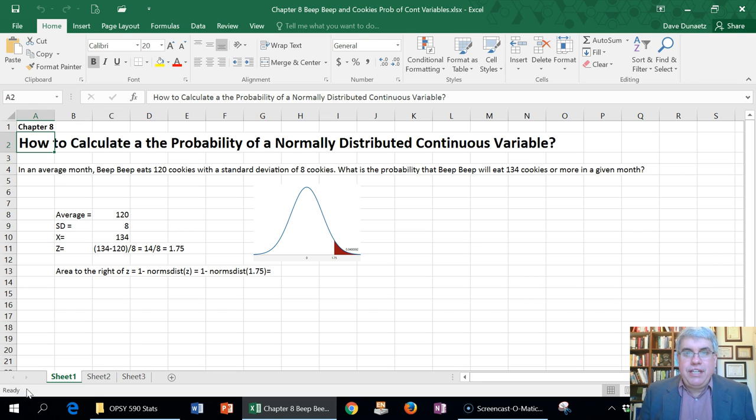Now, we want to know, given this information, what's the probability that Beep Beep will eat 134 cookies or more in a given month? Okay, because maybe 134 is the world's record or something like that. And we want to find out if it's likely that he'll beat that or how likely would it be that he'd beat it this month?